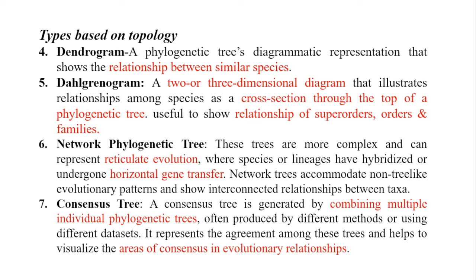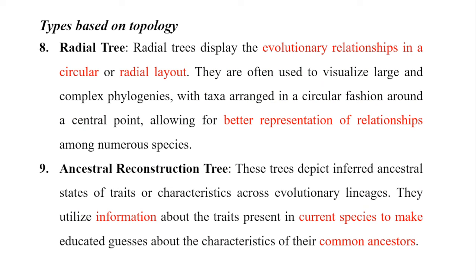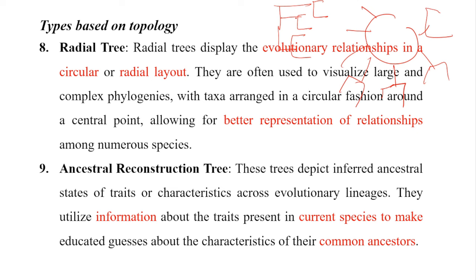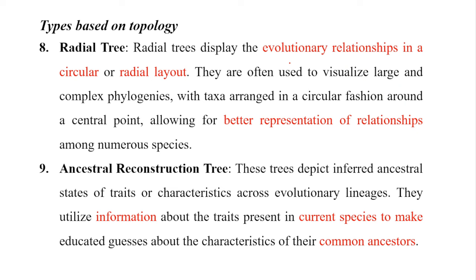A consensus phylogenetic tree is a combination of multiple phylogenetic trees that together evaluate evolutionary relationships. A radial tree represents the phylogenetic tree in a circular way — instead of constructing a linear tree, we represent it in a radial picture, giving better understanding of the relation between different species.